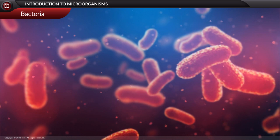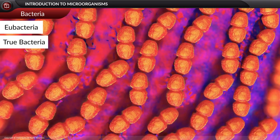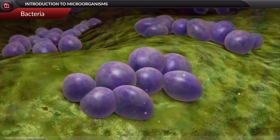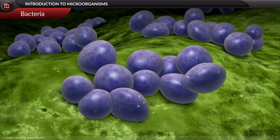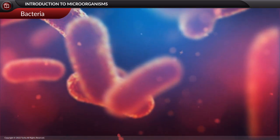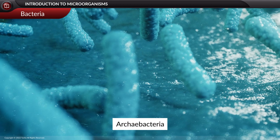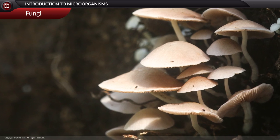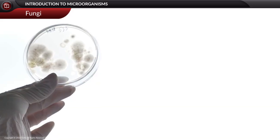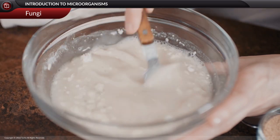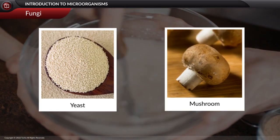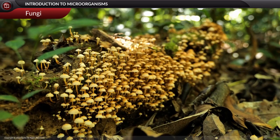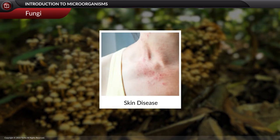Bacteria, sometimes called eubacteria or true bacteria, have extensive uses but can also cause diseases and food poisoning. Other microorganisms like archaebacteria are found in the same places as bacteria. Fungi are mostly microscopic unicellular or multicellular organisms, including useful organisms such as yeast and mushrooms which help in making edible products. However, fungi are also known to cause many diseases, especially skin diseases.